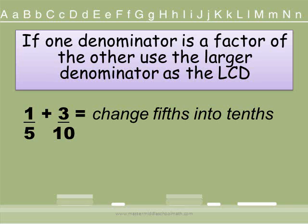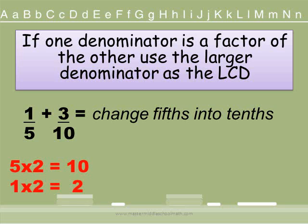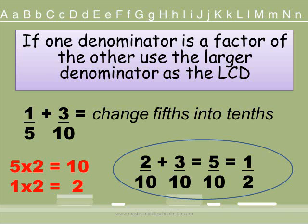Here is an example: 5 is a factor of 10, so we are going to change our fifths into tenths. 5 times 2 equals 10. Remember, whatever we do to one side we must do to the other. Since we multiplied the denominator, we are going to multiply our numerator. 1 times 2 is 2. We rewrite our fractions: 1 fifth becomes 2 tenths. 3 tenths stays the same. 2 plus 3 equals 5, giving us an answer of 5 tenths. Is there a number that goes into both the numerator and denominator evenly? Yes — 5 goes into 5 once and 5 goes into 10 twice. So the reduced answer is 1 half.